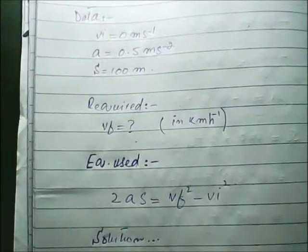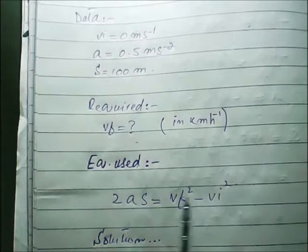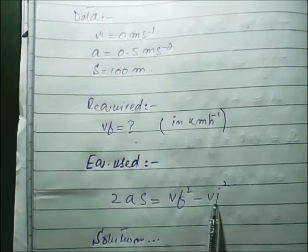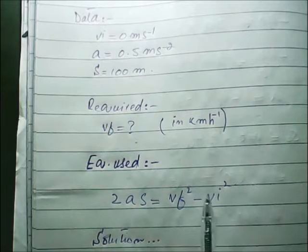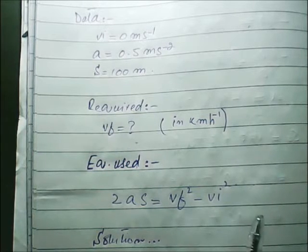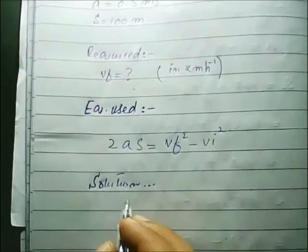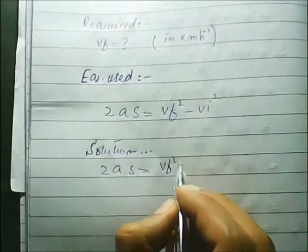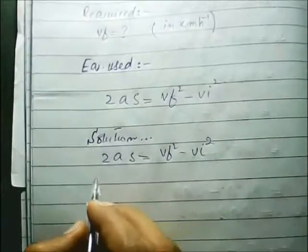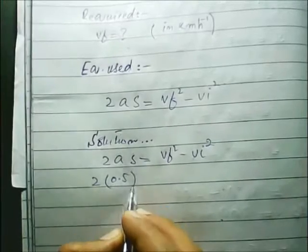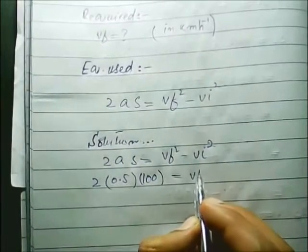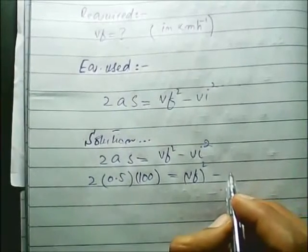We will use the third equation of motion because acceleration is given, distance is given, and initial velocity is given. Using v_f² = v_i² + 2as: acceleration is 0.5 meter per second squared, distance is 100 meter, initial velocity is 0, and final velocity is required.